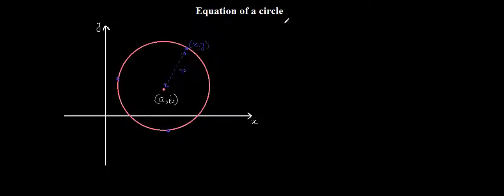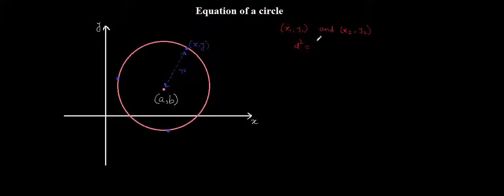The distance between these two coordinates is the radius of the circle, and I can write r in terms of a, b, x, and y using a formula from coordinate geometry. If I have a point x1 comma y1 and another point x2 comma y2, then the square of the distance between these two points equals the difference between the x-coordinates squared plus the difference between the y-coordinates squared. This formula is a derivation of the Pythagorean theorem.